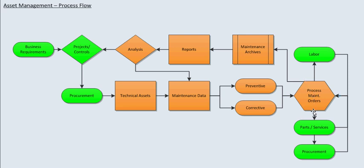For a maintenance request, you'll need either parts or labor. When you go to parts, this is shown in green because it's linking to the MM module — it's no longer PM. In parts or services, you could have inventory, or you could have to go externally, which means you have to procure them. Once you procure them, it comes back to the list of orders and you execute the work with your parts and your labor.